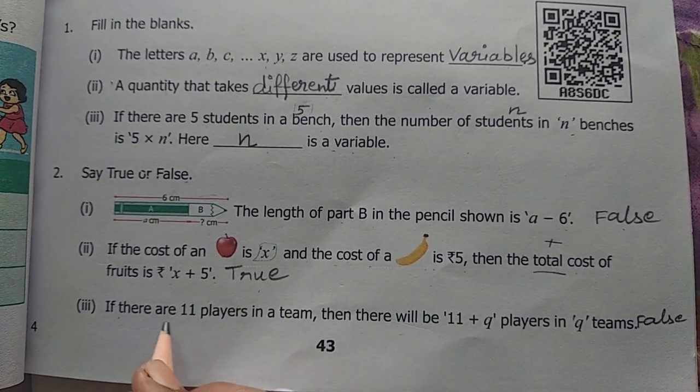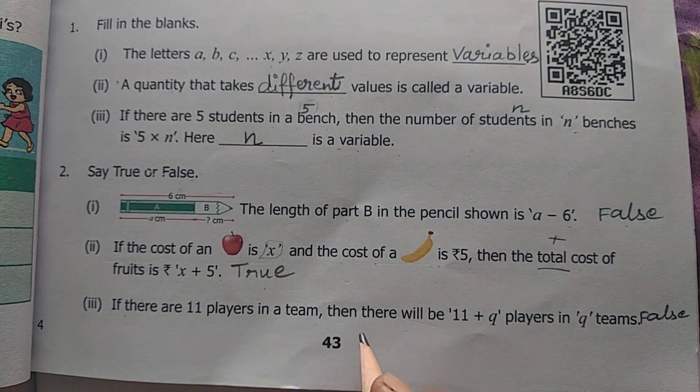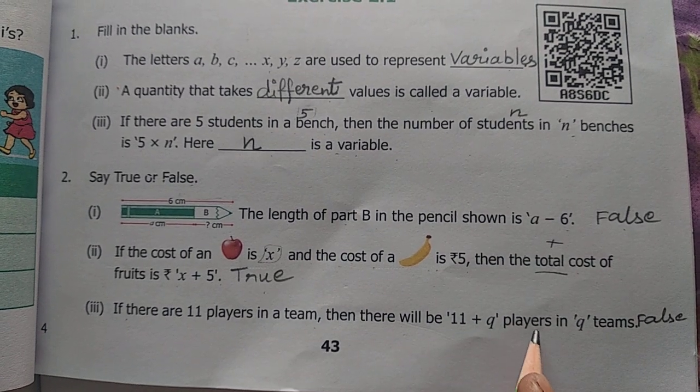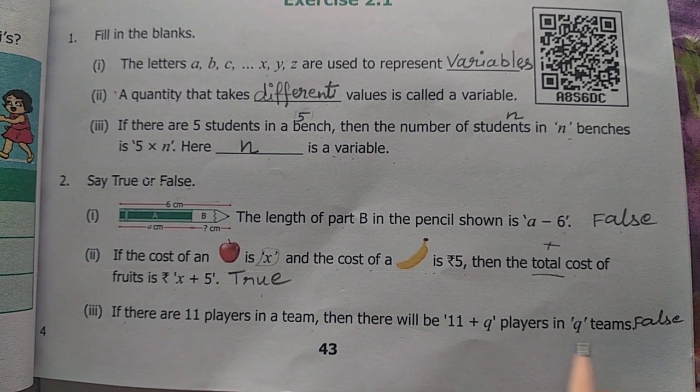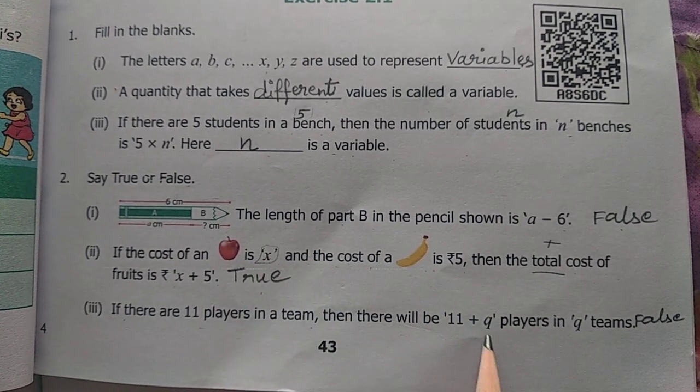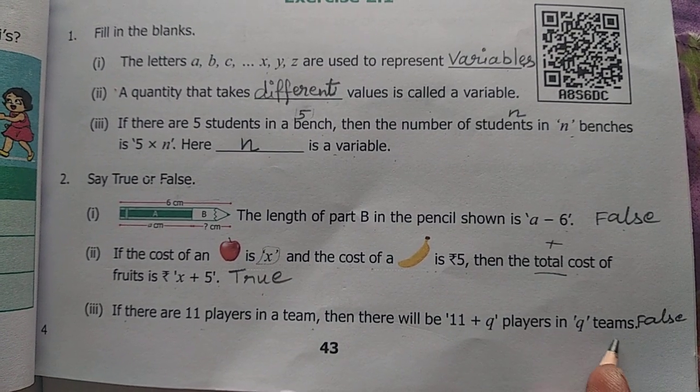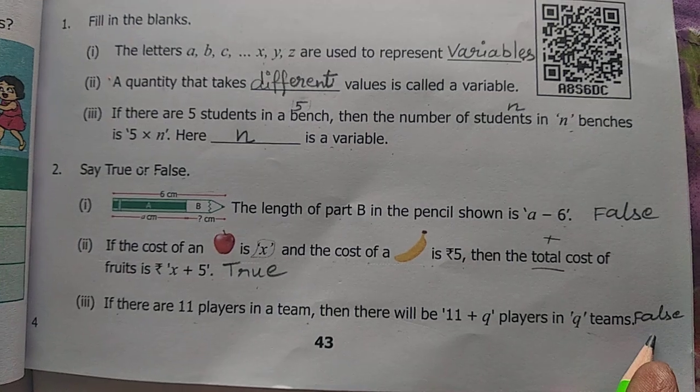If there are 11 players in a team, then there will be 11 plus Q players in Q teams. Wrong. 11 players in the team, that Q is mentioned in Q teams. So that is wrong.